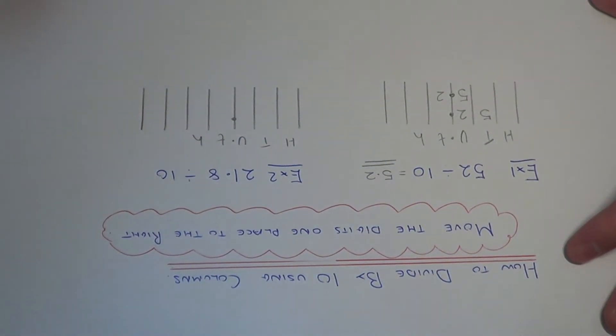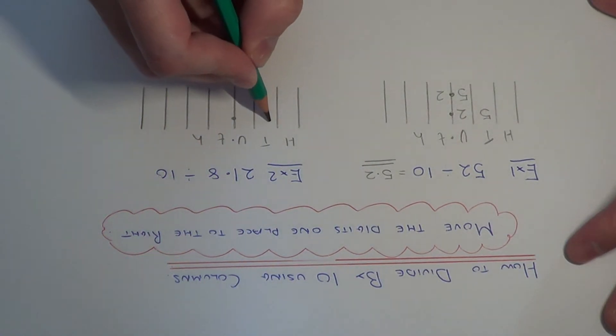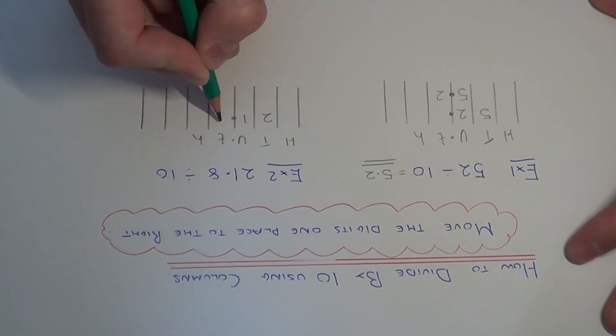Let's move on to example 2. This time we have 21.8 divided by 10. Again, we copy the digits into the correct columns. So the 2 in the tens, the 1 in the units, and the 8 in the tenths.